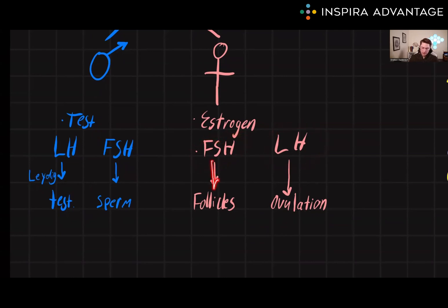FSH stimulates the development of the ovarian follicles, which contain immature eggs. LH triggers ovulation due to the LH spike, which causes the release of a mature egg from the ovary into the abdominal cavity and ultimately ready for fertilization.